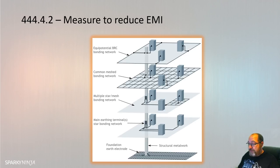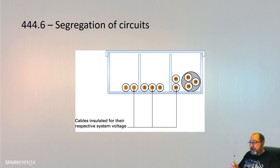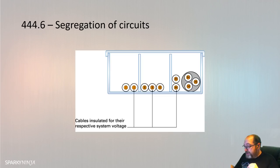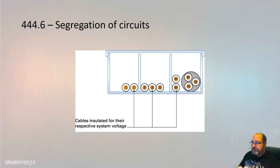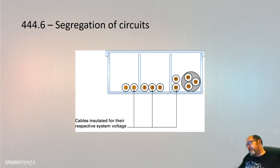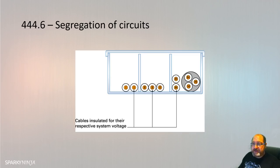Section 444.6 covers segregation of circuits. Cables used at band two voltage (low voltage) and cables used at band one voltage (extra-low voltage, such as SELV) which share the same cable management system or route shall be installed according to the requirements of 528.1 and 528.2, which we'll cover in chapter 52. It's all about segregation — for example, a dado trunking in an office or school with power in one compartment and data in the other — to reduce electromagnetic interference.